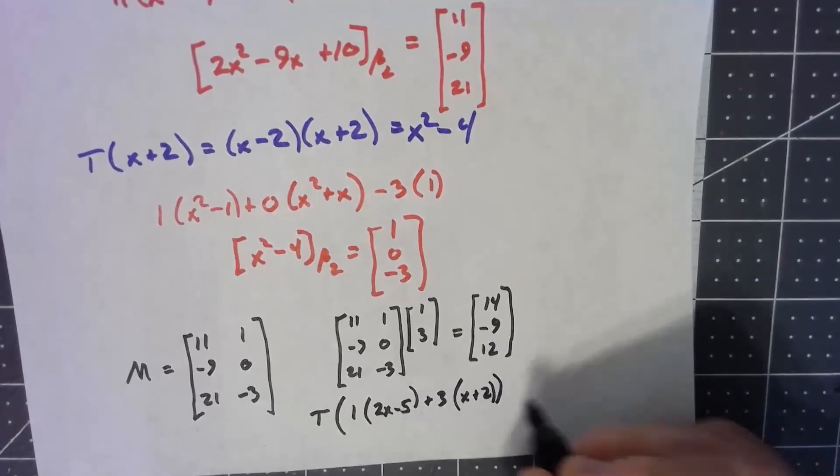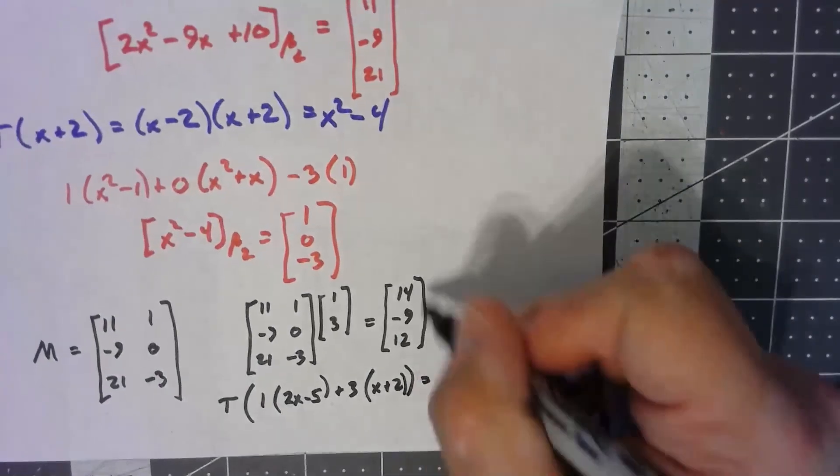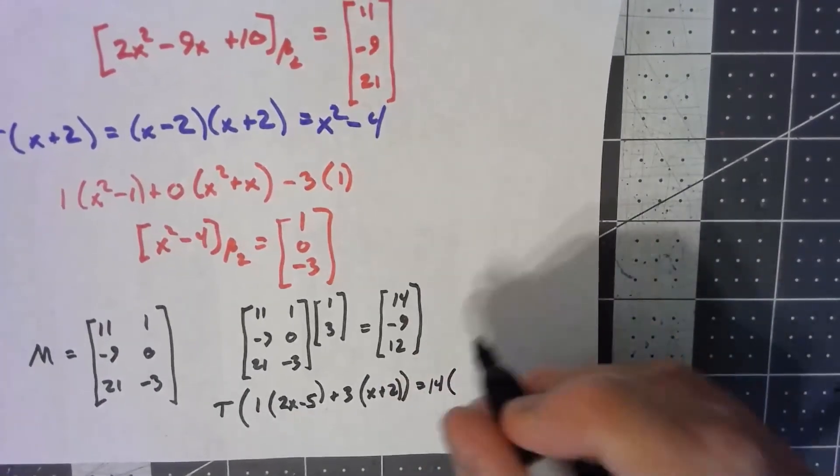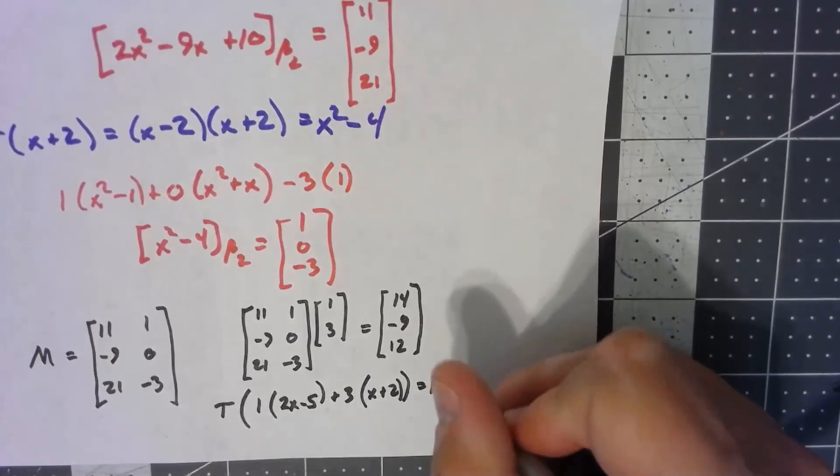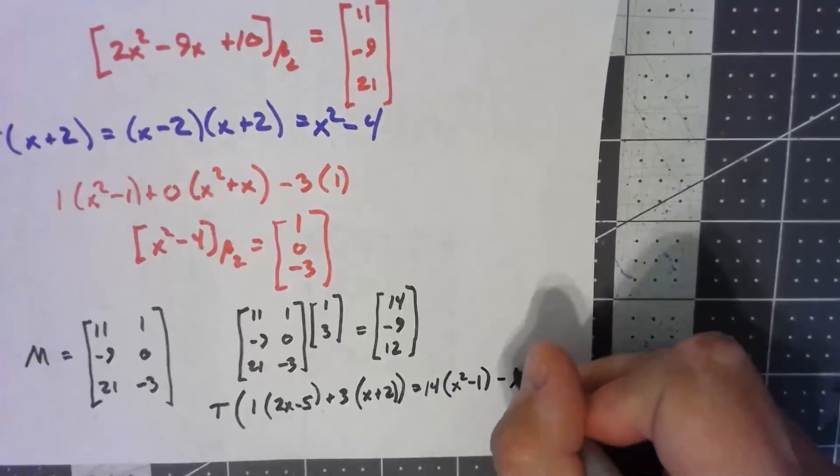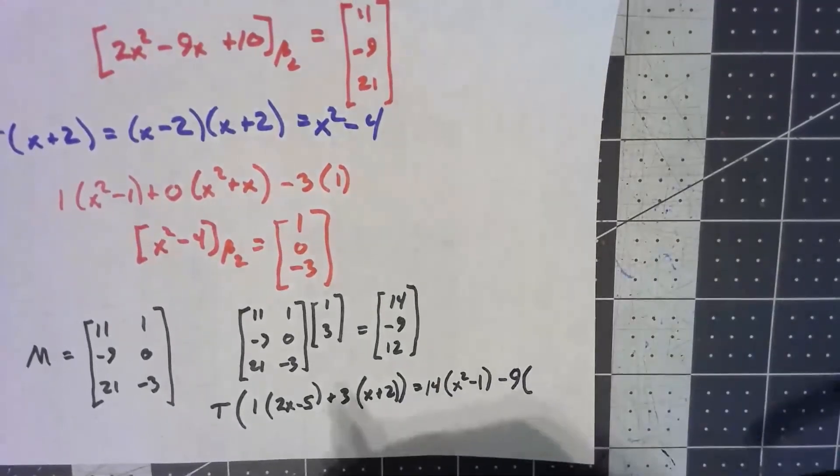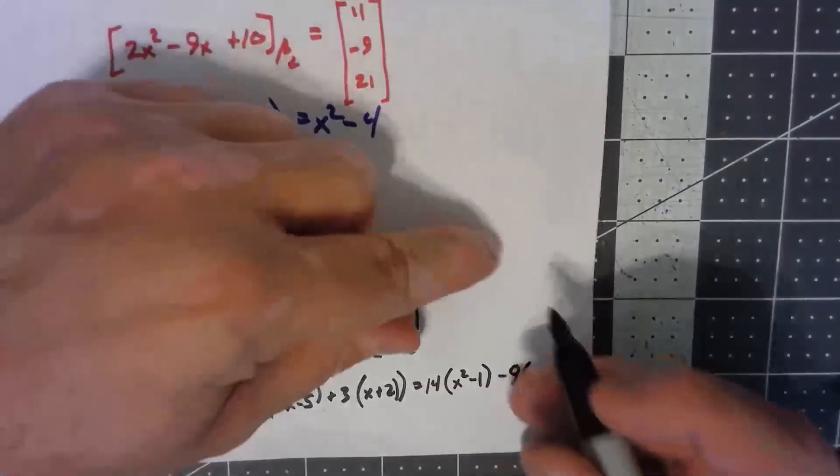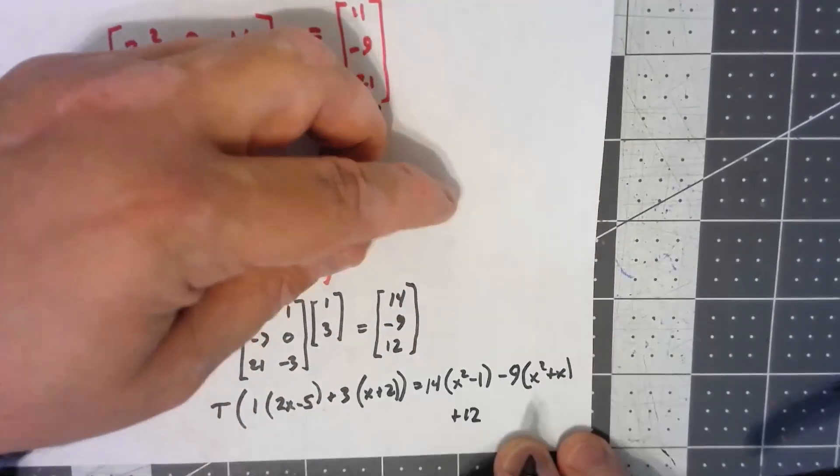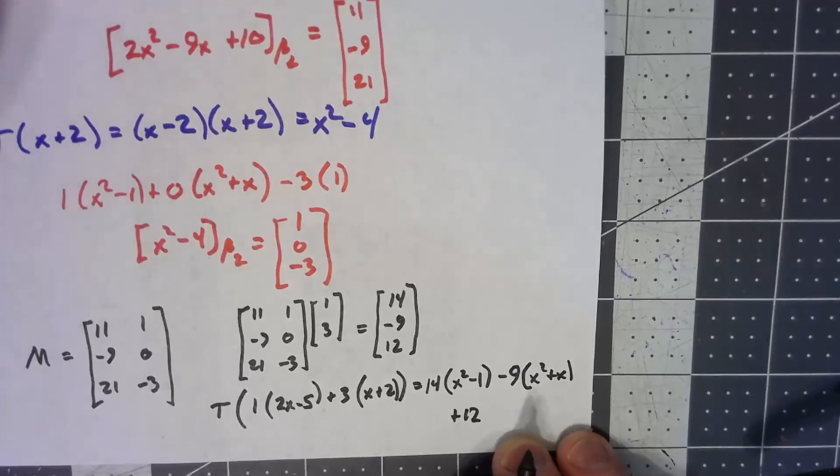This is the coordinate vector for what the transformation becomes. That's 14 times x squared minus 1, minus 9 times x squared plus x, plus 12 times 1.